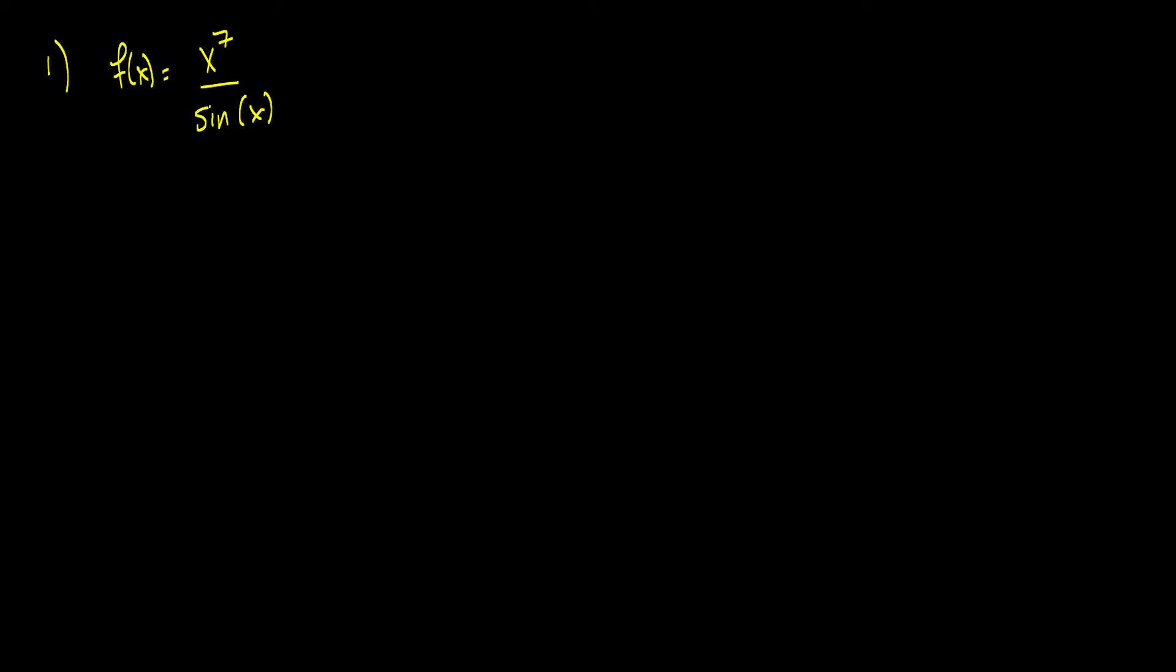All right, let's take a look here. f prime of x is equal to, well, the quotient rule says the derivative of the top multiplied by the bottom minus the top times the derivative of the bottom. And this is all over the bottom squared. So I'm not even going to factor out anything here.